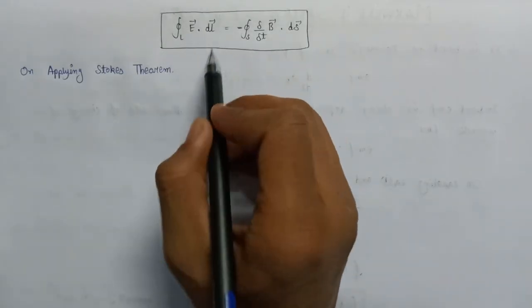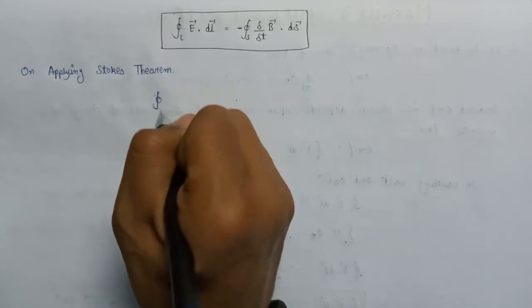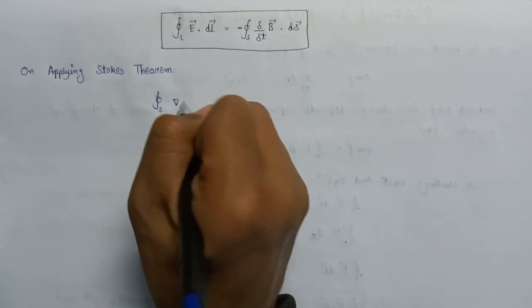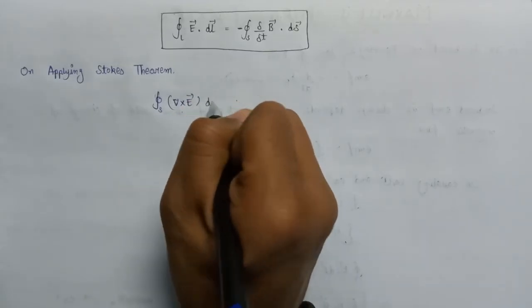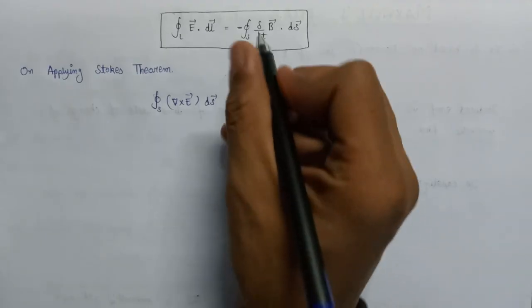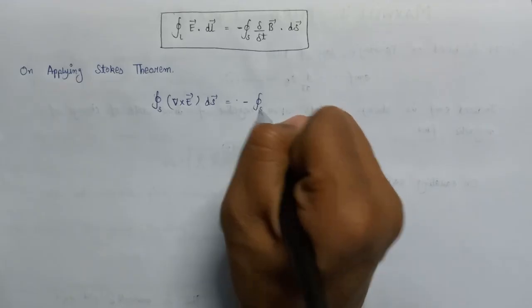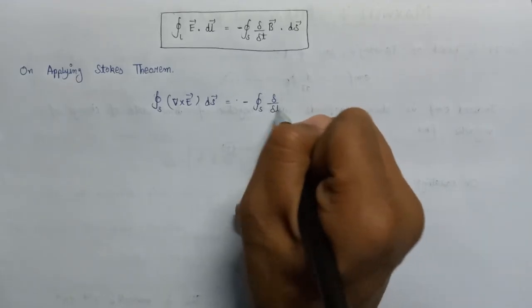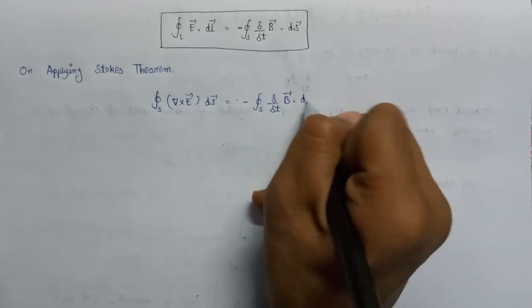On applying Stokes' theorem, the line integral of E dot dl can be represented as the surface integral of the curl of the electric field — that is, del cross E — dotted with dS. This equals minus the surface integral of del/del_t of B dot dS.